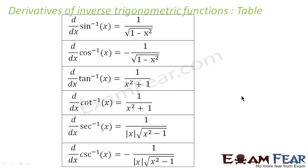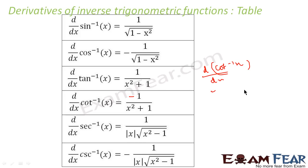So if you derive all, you get this kind of table — you can try the others on your own. To summarize: d/dx(sin⁻¹x) = 1/√(1−x²); d/dx(cos⁻¹x) = −1/√(1−x²); d/dx(tan⁻¹x) = 1/(1+x²); d/dx(cot⁻¹x) = −1/(1+x²). Note: there is a correction — cot⁻¹x differentiates to −1/(x²+1). These are the derivatives of inverse trigonometric functions.